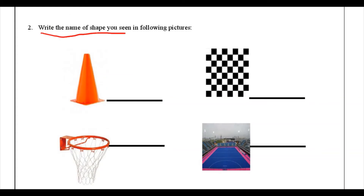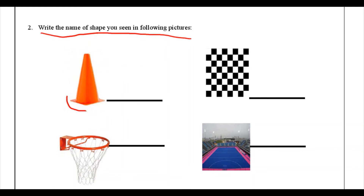Next, write the name of the shape you see in the following pictures. In the first picture you have to find the shape. You can see there is a cone shape formed here. So one shape from this picture is cone. I cannot clearly find any other shape here, so we will go with cone.